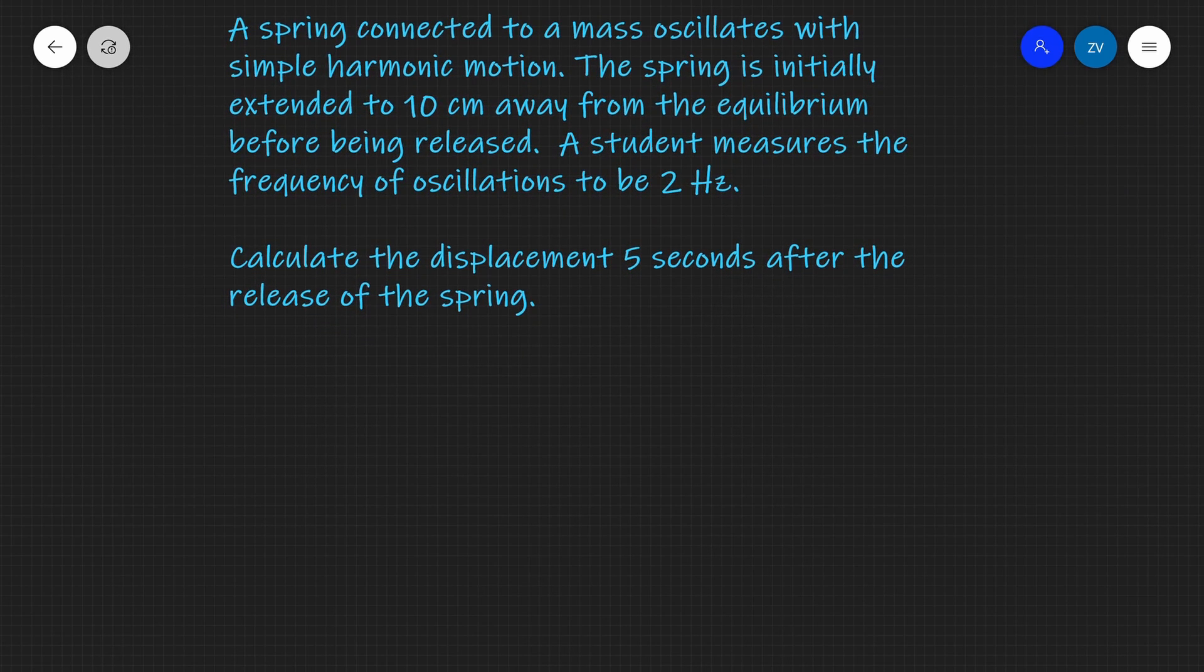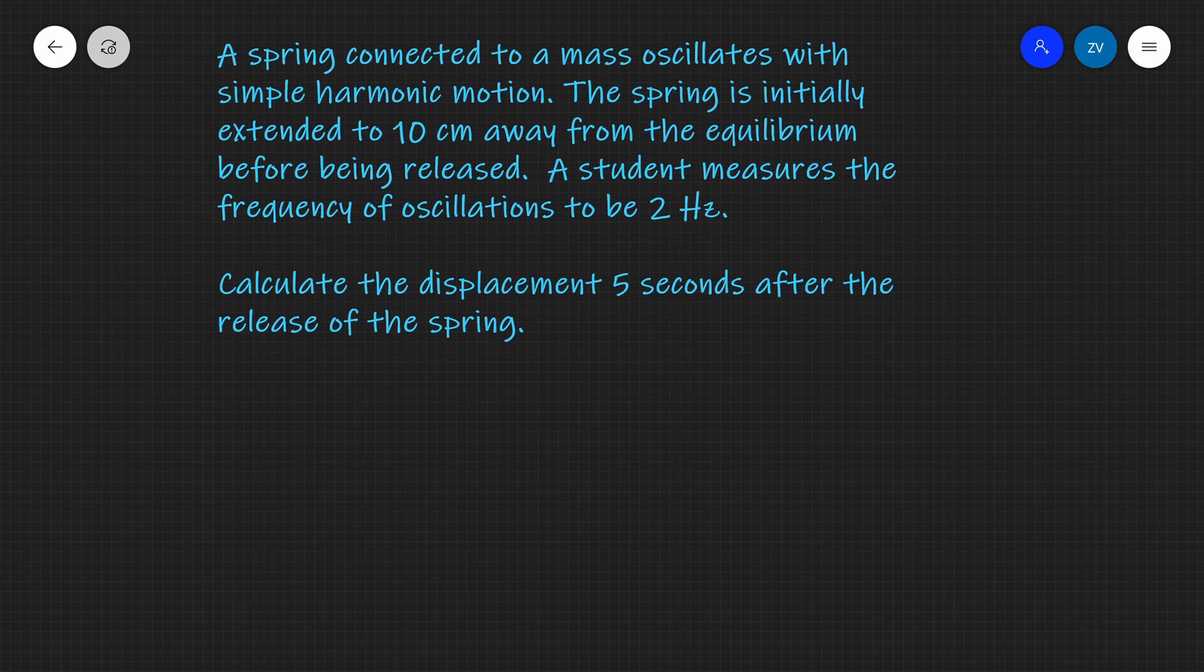Our first job will be to figure out which equation we're going to be using. Because the spring is initially extended to 10 centimeters away before being released, we're going to need to use the cosine equation because we are starting at our amplitude. So I'm going to write down this equation: displacement equals A cosine omega t.